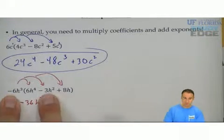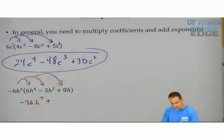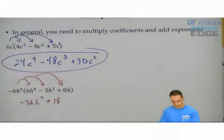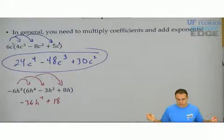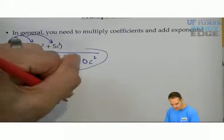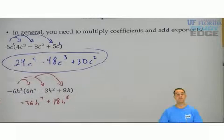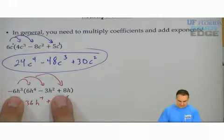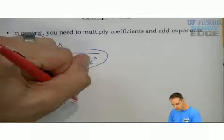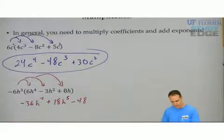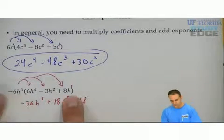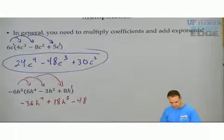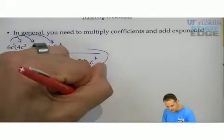Negative 6 times negative 3: negative times negative is positive, 6 times 3 is 18. Now add the exponents: 3 plus 2 gives you h to the fifth. Negative 6 times positive 8 is negative 48. And 3 plus 1 — remember, there's a 1 there, it's h to the first power — 3 plus 1 gives you h to the fourth.